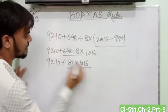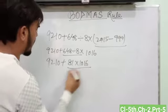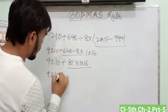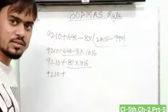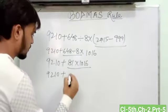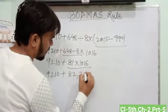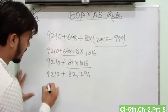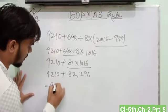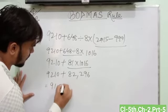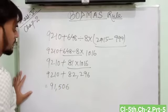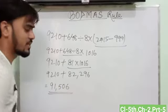And now, multiply this one. When we multiplied this one, we got 2210 plus 82296. And when we add, we got 91526 as a result.